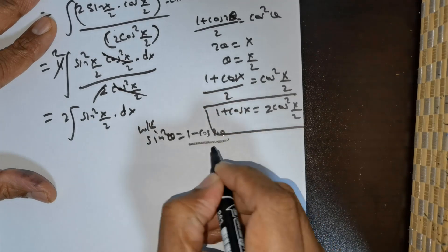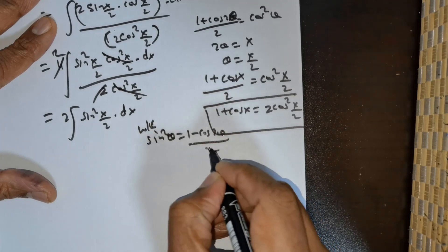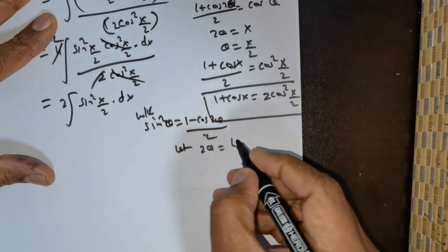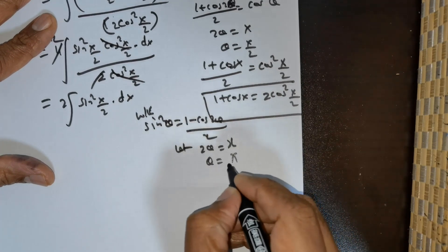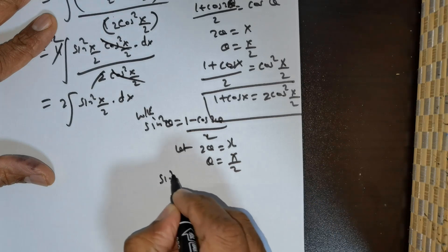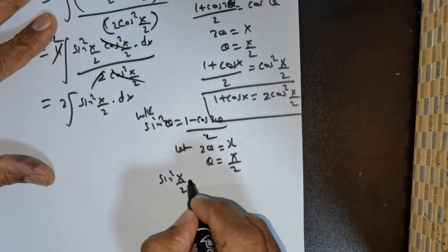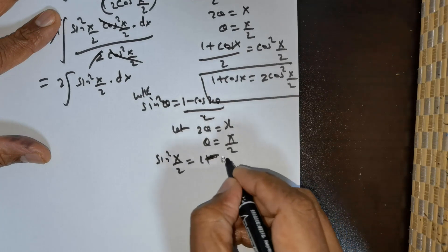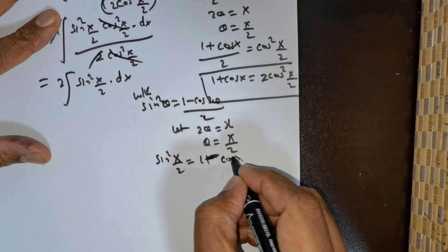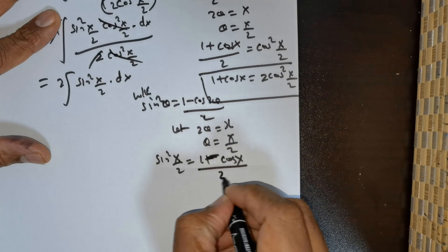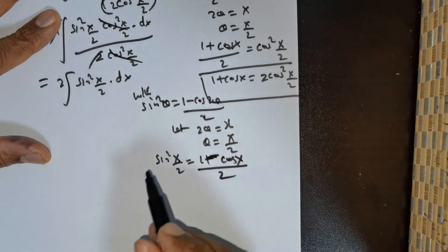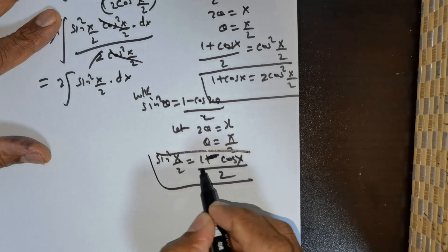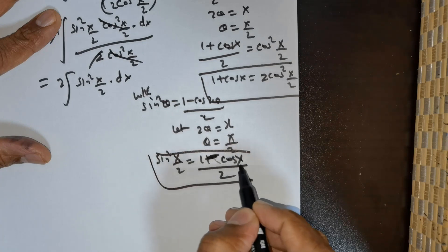We know that sin²(θ) = (1 - cos(2θ))/2. Taking 2θ = x, so θ = x/2, this gives sin²(x/2) = (1 - cos(x))/2. So in place of sin²(x/2), I will use (1 - cos(x))/2.